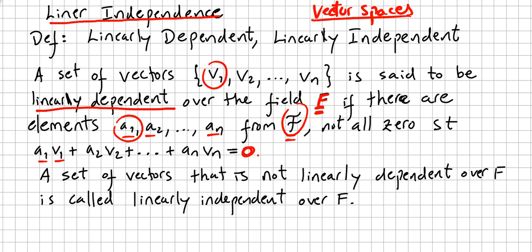we say that the set of vectors is linearly dependent. A set of vectors that is not linearly dependent over a field is called linearly independent over the field.